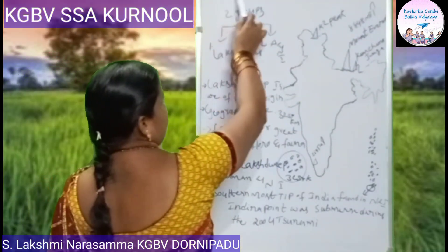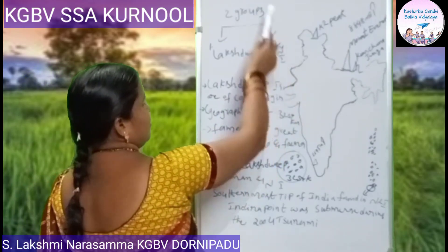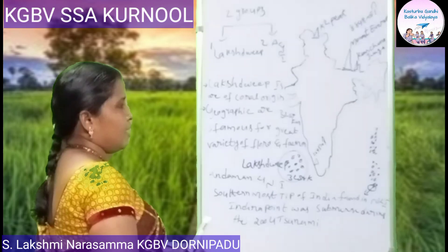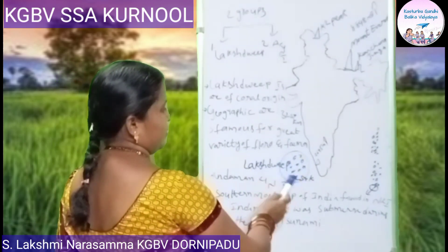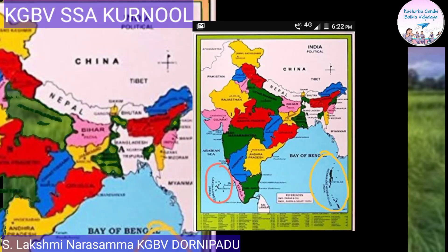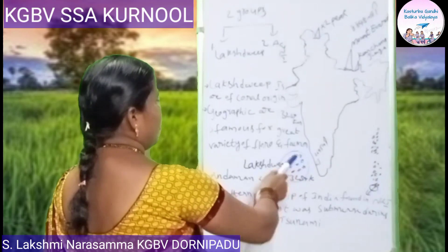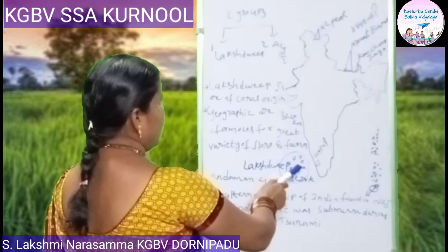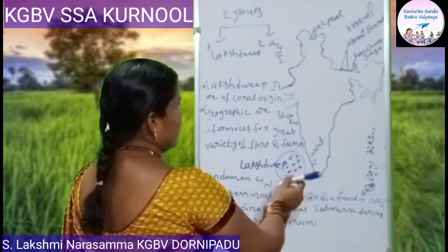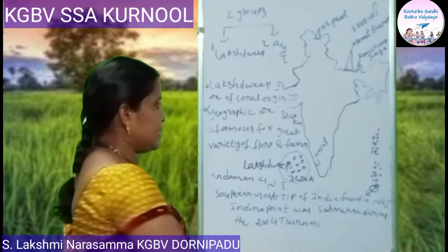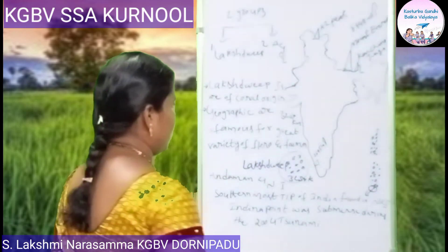Now let us see the islands. Our India has two groups of islands: one is Lakshadweep, and the second is Andaman and Nicobar Islands. The Lakshadweep Islands are located in the Arabian Sea, and the Andaman and Nicobar Islands are located in the Bay of Bengal. The Lakshadweep Islands are of coral origin, with a geographical area of 32 square kilometers. Lakshadweep is famous for great variety of flora and fauna.